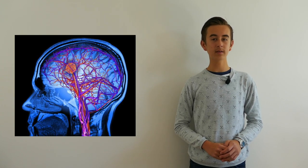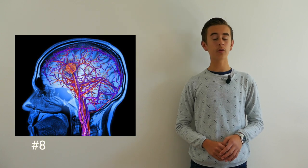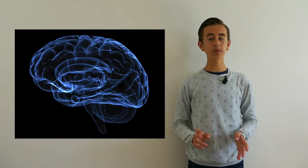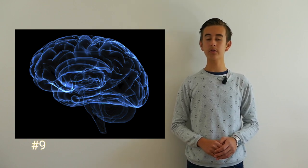During early pregnancy, in an embryo's brain, neurons multiply at a rate of 250,000 per minute.